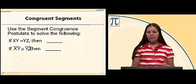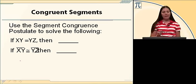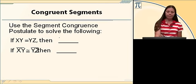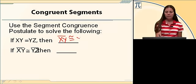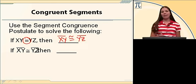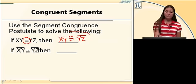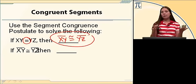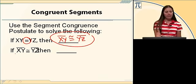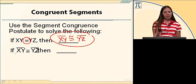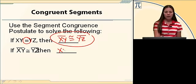Let's use the segment congruence postulate to solve the following. If XY equals YZ, then segment XY is congruent to segment YZ. The equal sign tells me I'm talking about the actual length or measure — seven inches, seven miles, seven meters — while the congruence symbol says the two figures are the same size. Conversely, if segment XY is congruent to segment YZ, then XY equals YZ.